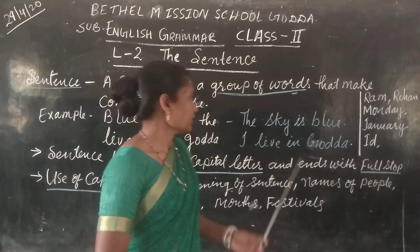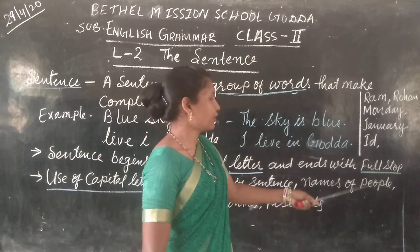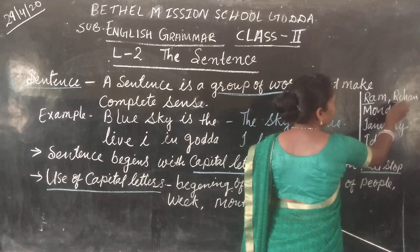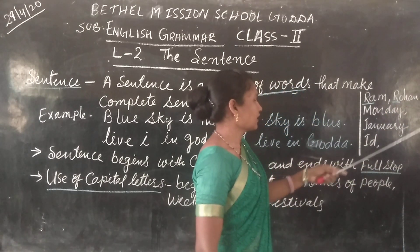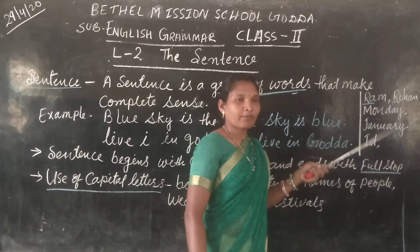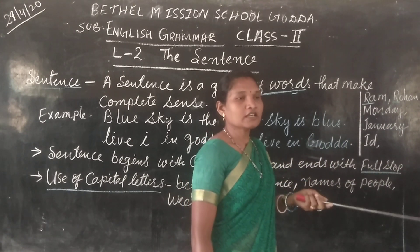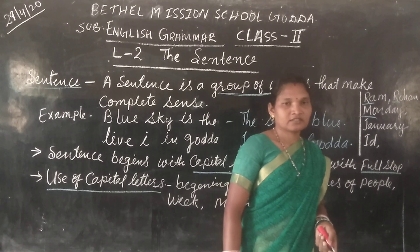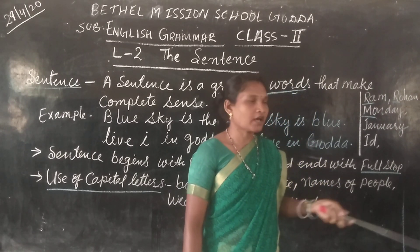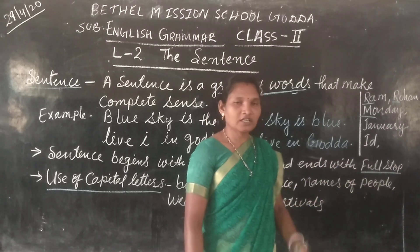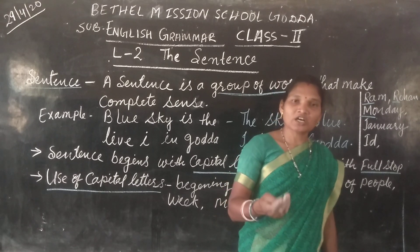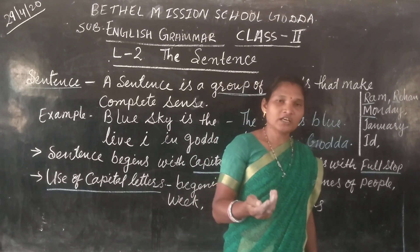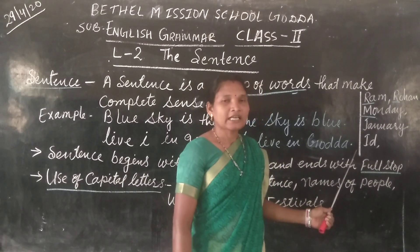So dear children, now you see here — the names of people. We are writing Ram, Rohan — these start with a capital letter. The days of the week: when you write Sunday, Monday, Tuesday, Wednesday — all these start with a capital letter. Then the months of the year: January, February, March, April, May, June, July — all start with a capital letter. Then festivals like Durga Puja, Christmas, Holi — all these festival names start with a capital letter.